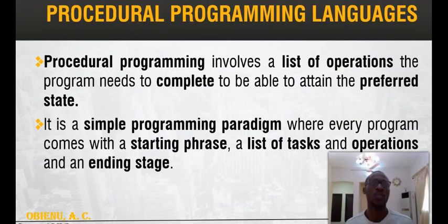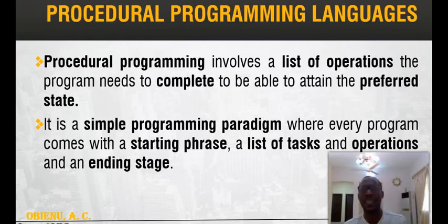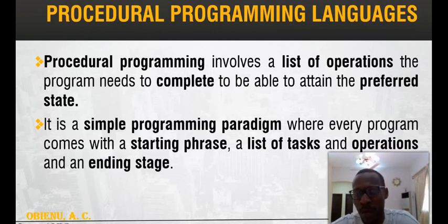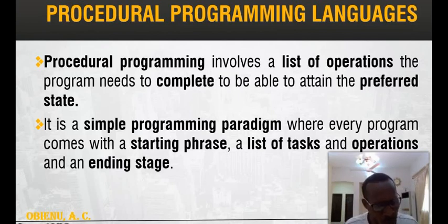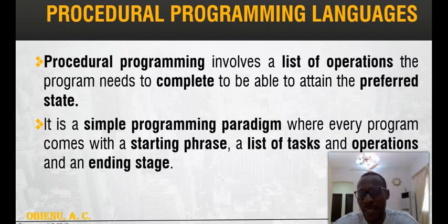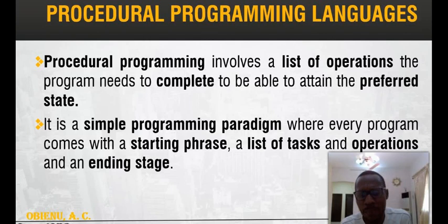Next, Procedural Programming Languages. These involve lists of operations that the program needs to complete to attain a preferred state. From the name 'procedural', you should be able to attain A, then B, then C before getting to D. Unlike some programs where components can work independently, in procedural languages component B cannot be in operation without component A being completed first.